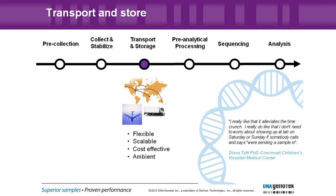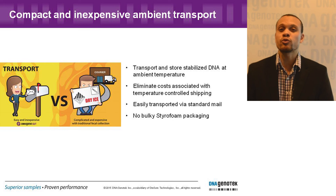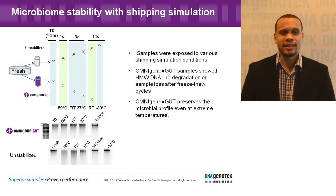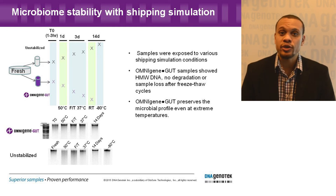Speaking of returning samples to the lab, when we look at the different steps in the value chain, you'll need to transport your valuable material from one location to the next. As highlighted on the previous slide, the bulky box versus the slim envelope is crucial at that stage for cost savings and simplicity. The sample must also be robust enough to survive different exposures during shipping, and we have data that we will be sharing on our website in the future on the changes in temperature and humidity during shipping.